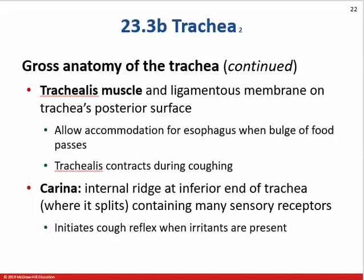There's a small muscle called the trachealis muscle that closes off the C-shaped rings. When you're swallowing, the esophagus bulges into the trachea, and then the trachealis muscle pushes it out. At the bottom of the trachea is a little ridge called the carina where the trachea branches into the left and right primary bronchi; it's covered with nerve endings that cause coughing when irritants are present. That's why people who inhale smoke end up coughing — it's the carina.